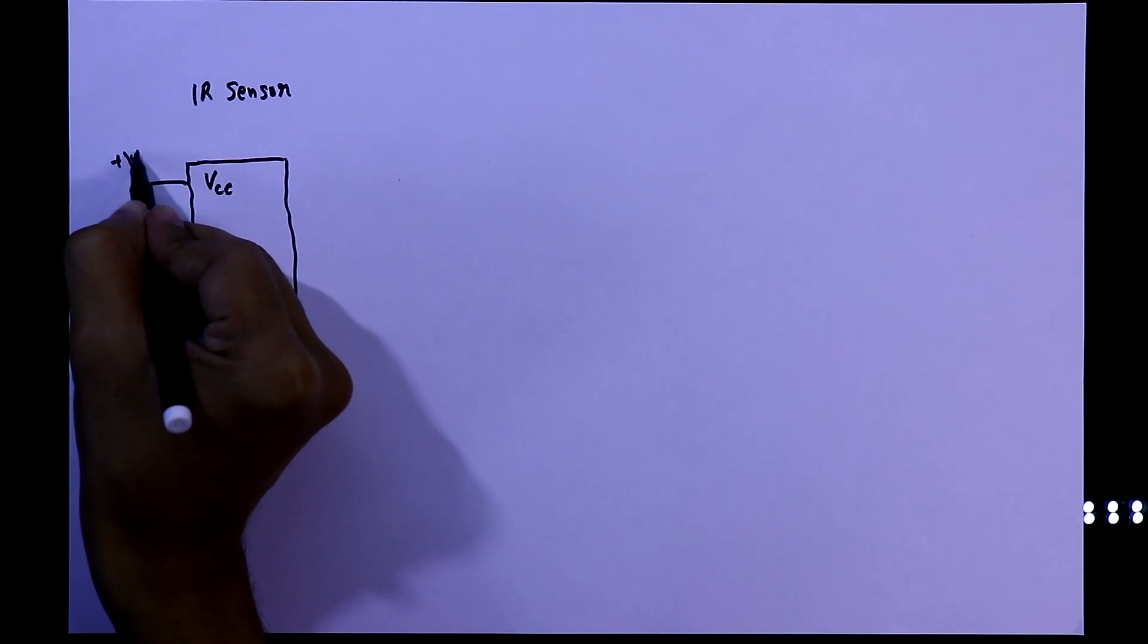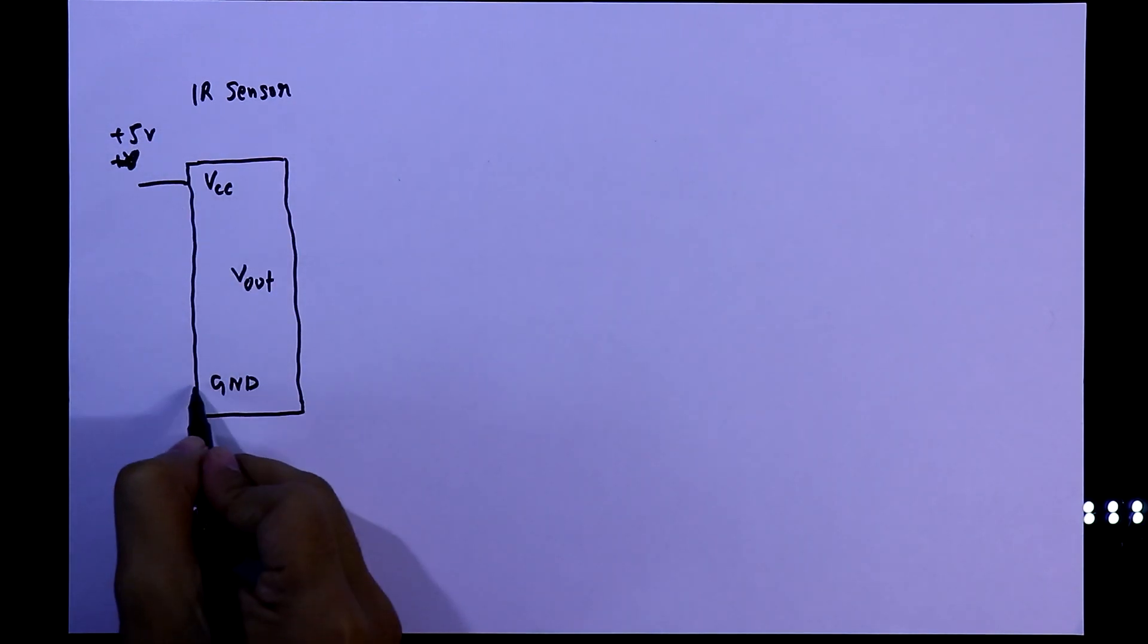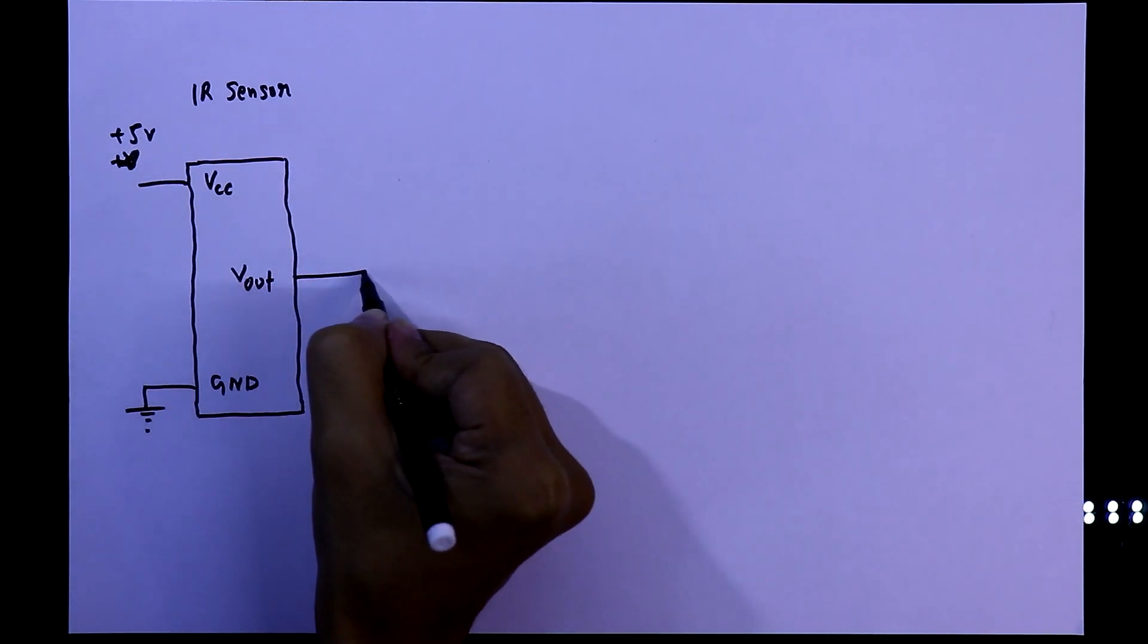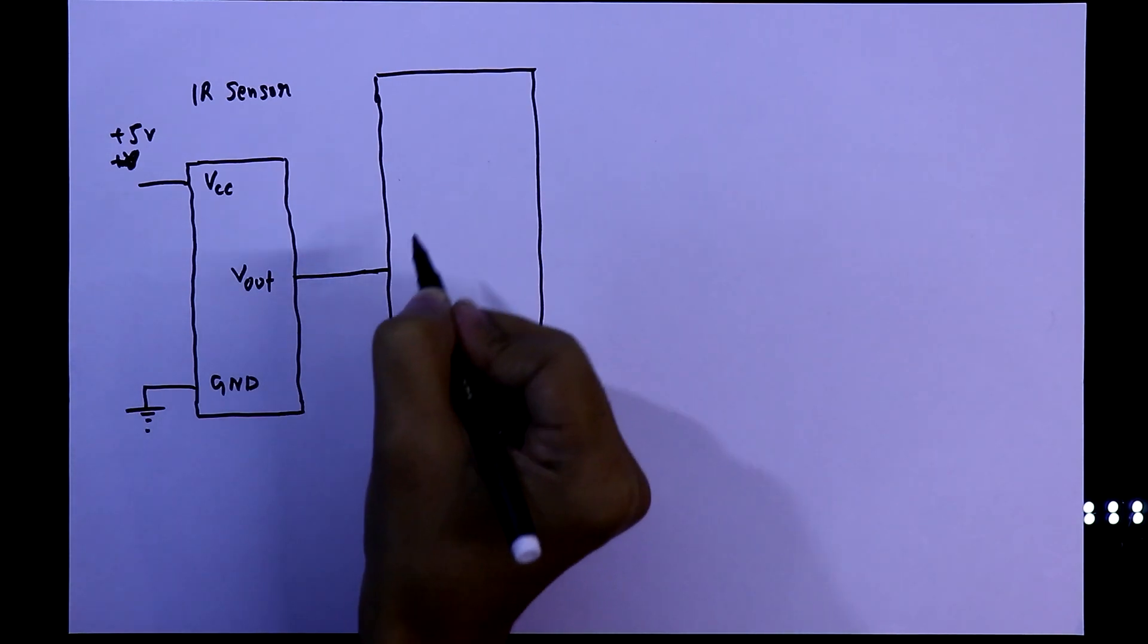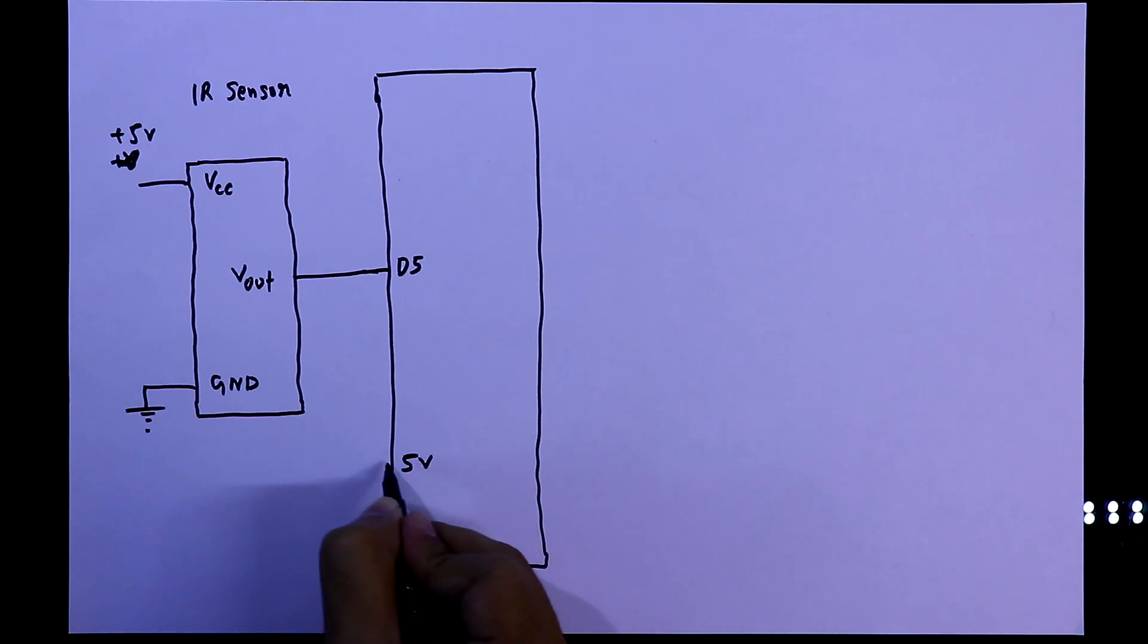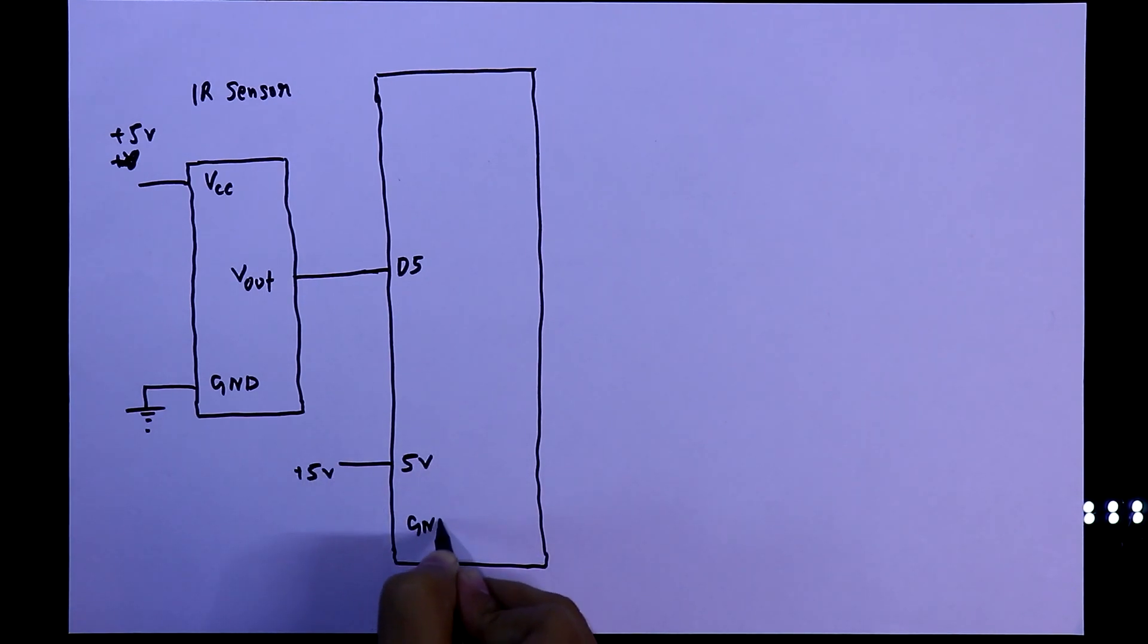VCC should be connected to plus 5V, ground is connected to ground, and Vout is connected to the Arduino. I will connect this to D5 according to my program. 5V pin of Arduino should be connected to plus 5V and ground pin of the Arduino is connected to ground.